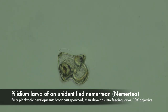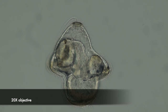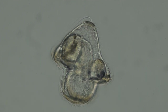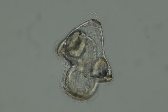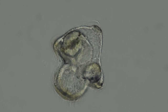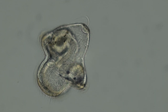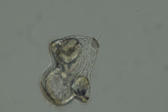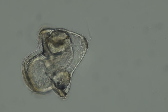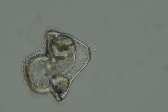And here is the pilidium larva of a nemertean. You can see the compartment with a lot of ciliary action in it on the left side of the screen. Towards the right of the screen you can see the developing juvenile — it has two big black spots on it. Eventually it will pop out of the larva, eat the larval tissue, and go about its life as a juvenile, then adult nemertean.